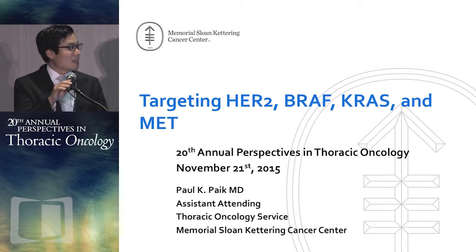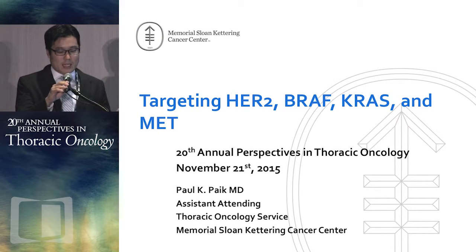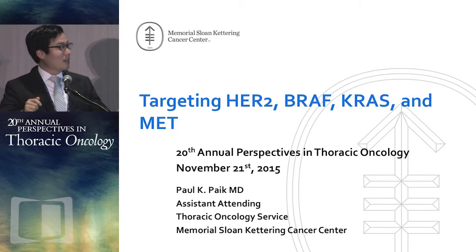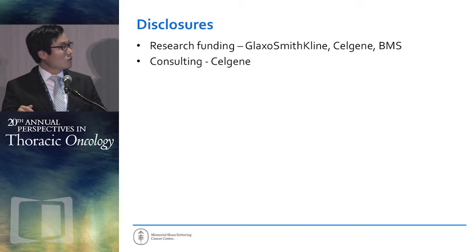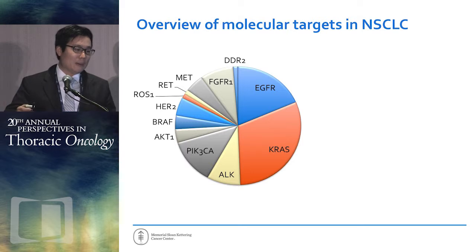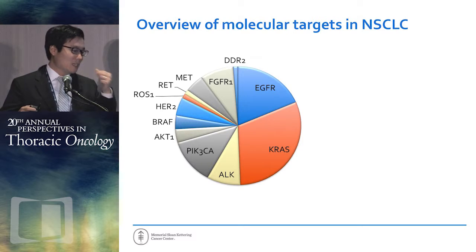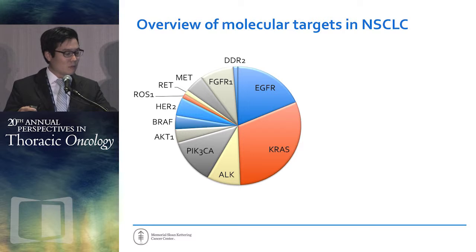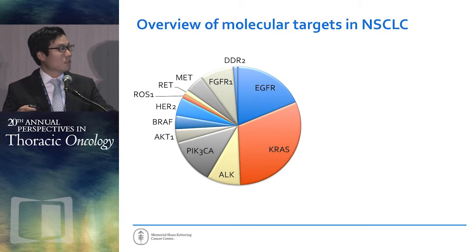I will try to get through this as quickly as I can. These things are sort of disparate topics — it's like a slice of the pie no one wants to eat, except maybe the last one. We'll start with the pie, because I think it will help us conceptualize the four different targets I'll be talking about today: KRAS at 25%, HER2 and BRAF at around 3 to 4% of patients, and MET alterations that happen in about 4% of patients, depending on how you characterize them.